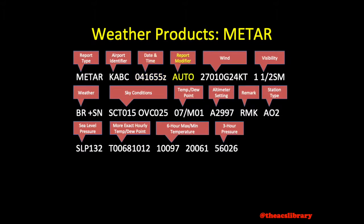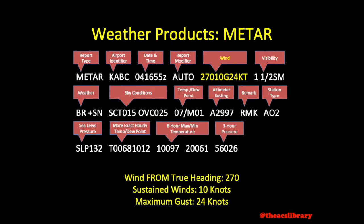Whether or not the METAR is automated — in this case it is. Wind direction is coded as the 3-digit true heading, followed by up to 3 digits of wind speed. In our example, we have a 10-knot wind blowing from the west to the east, gusting to a maximum of 24 knots.